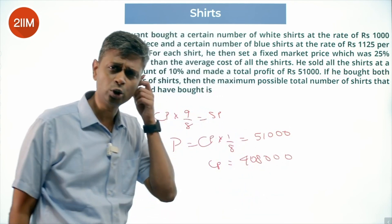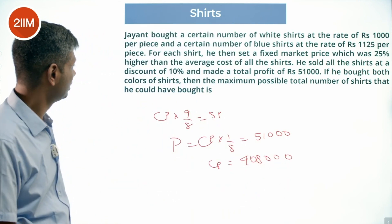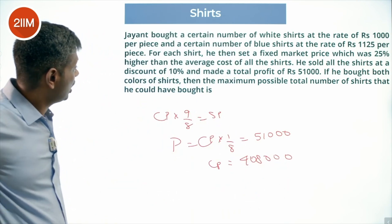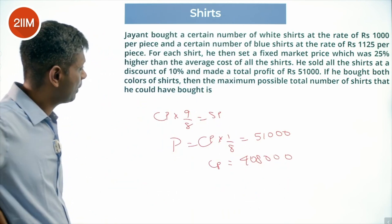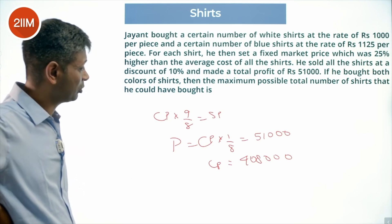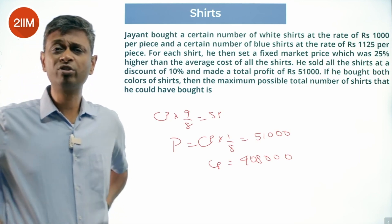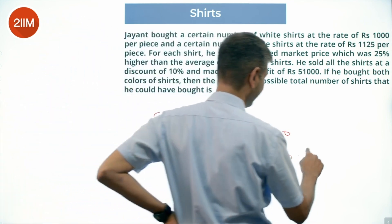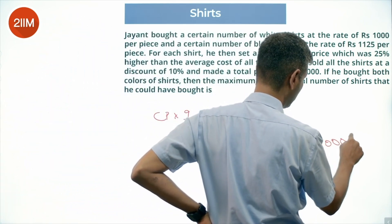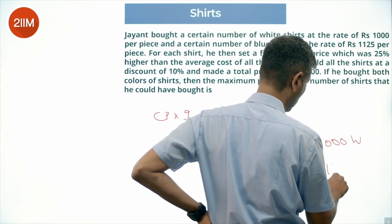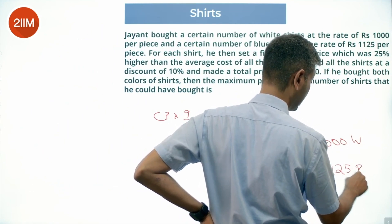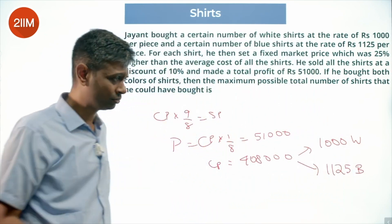If he bought both colors of shirts, then the maximum possible total number of shirts that he could have bought: Rs 408,000 is total cost price, which equals 1000m for white and 1125n for blue shirts.